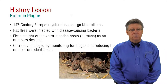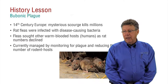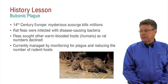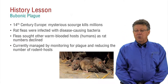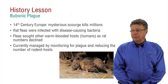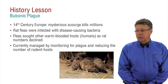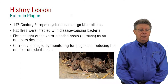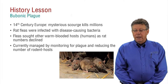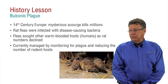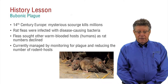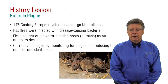Centuries later, it was discovered that the plague was a bacterial disease that was spread by fleas found in rodent populations. Infected fleas would bite not just rats, but humans and other mammals as well. Bubonic plague is still present in some rodent populations today, even here in the United States.